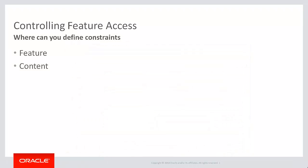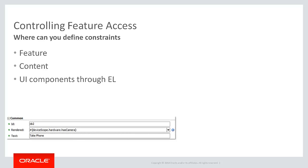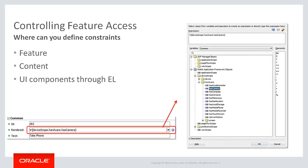So we can define constraints at both the feature and the content level, but there is a third way of accessing constraint information — through something called expression language, or EL. You'll learn more about expression language later in this course, but any of the properties you've seen so far, like hasCamera or networkStatus, can be accessed from UI components using expression language. For example, you might decide that a button used to take a photo should only be visible if the device can support taking a picture — in which case you can set the button's rendered property to deviceScope.hardware.hasCamera, so the component is only rendered for devices with a camera.